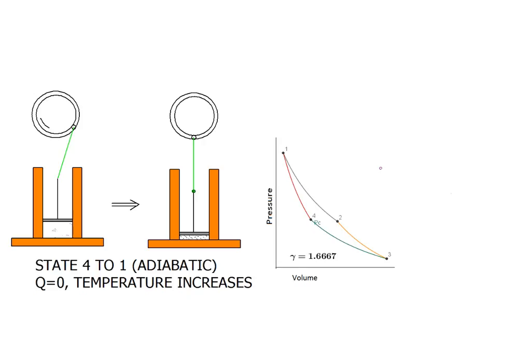Our path is going to take us back to state one to complete the cycle. The curved segment equation will be like that of the segment from state two to state three except that the constant PV to the gamma will be different.